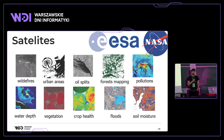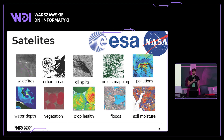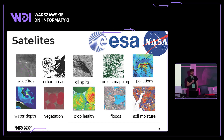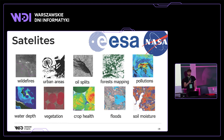Satellites and machine learning are already successfully used in many use cases for facing climate changes and fighting natural disasters. We can use satellites to detect wildfires and track them, to monitor urban area growth, to detect oil spills in oceans, to map forest areas, detect pollutions, and to measure the depth of oceans up to 30 meters.